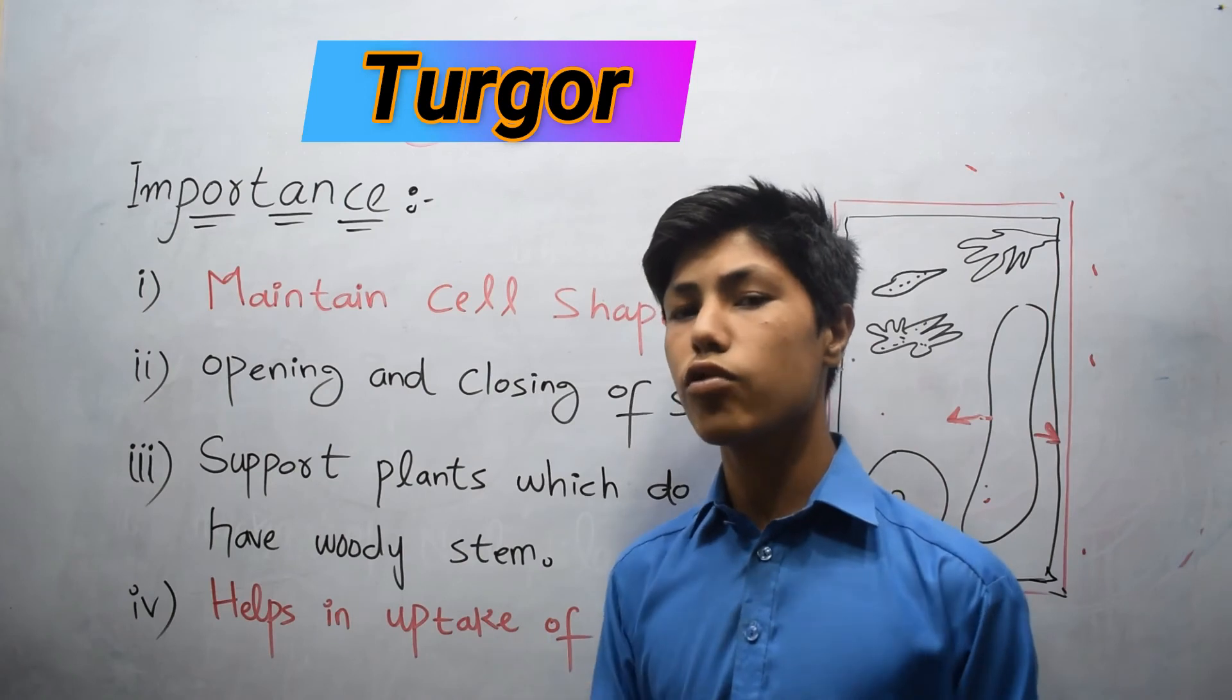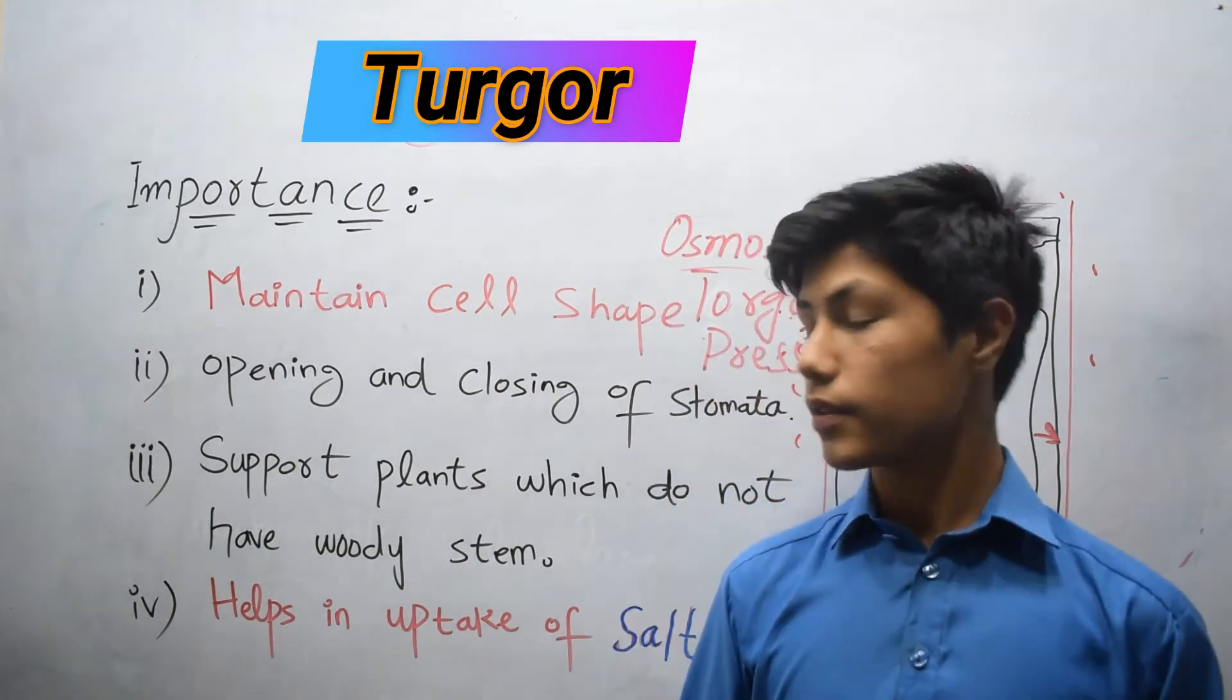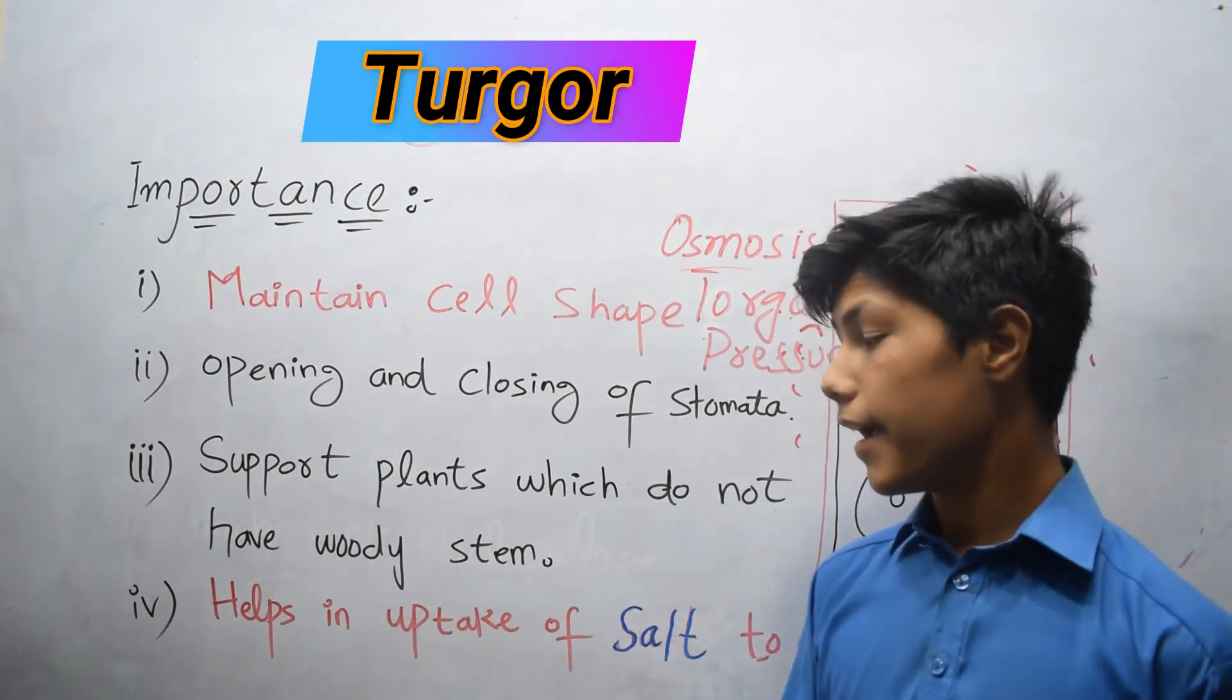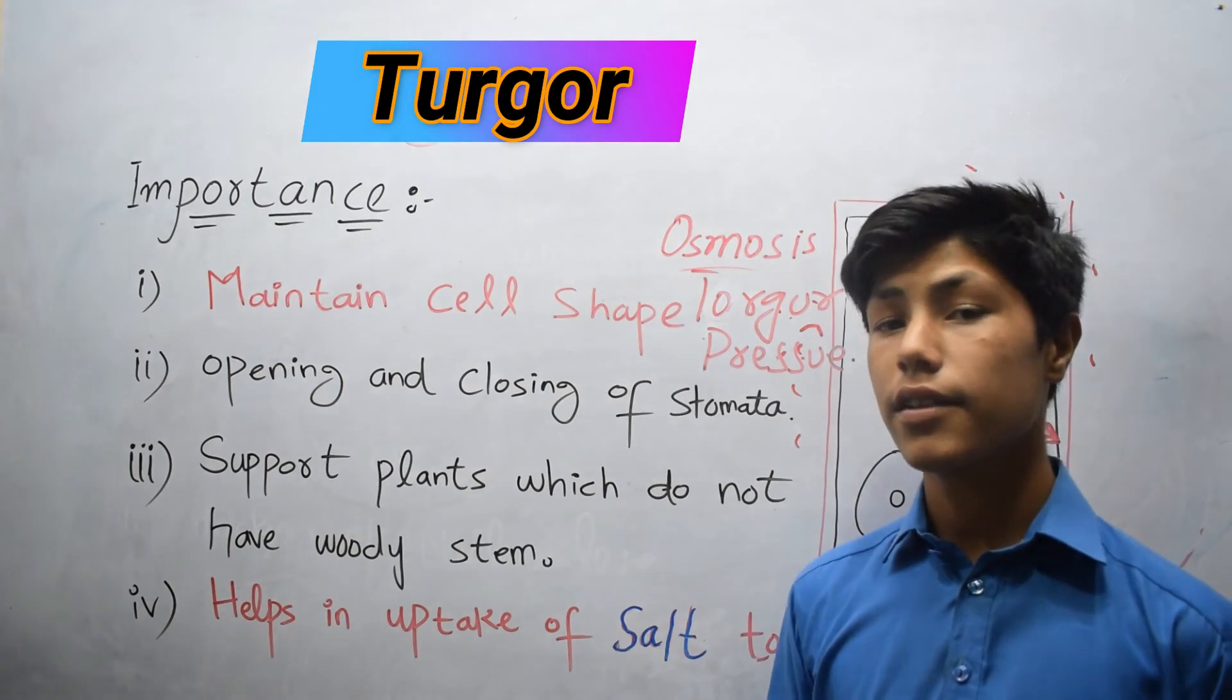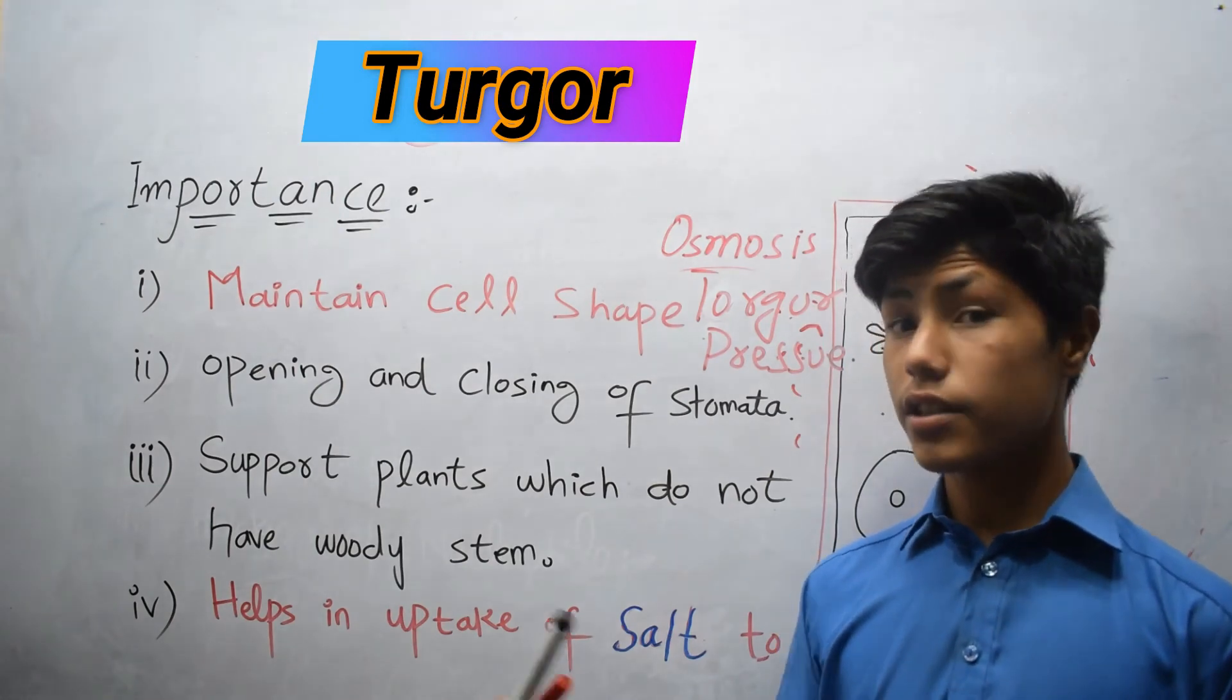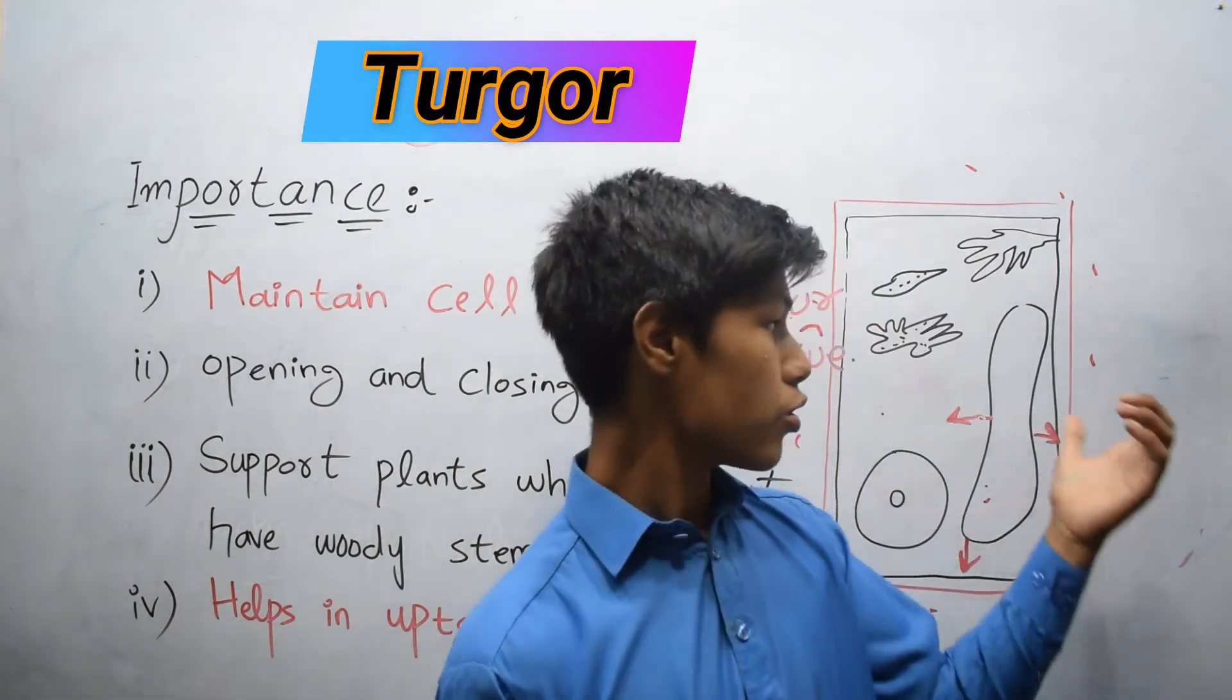It grows loose and upright. The last one is it helps in uptake of salt to the cell. Just like water, the salts also move through the process of osmosis to the vacuole.